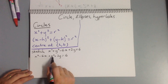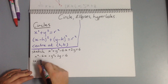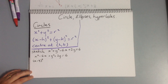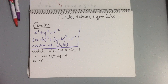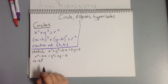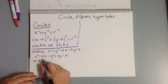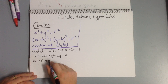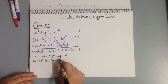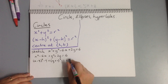We need to complete the square on both terms. So remember we need x minus 3 squared, and we're going to take 9 away from there. Then we've also got y plus 1 squared, take 1, equals 6.